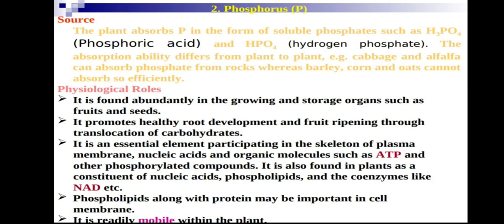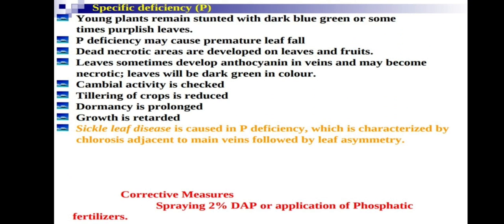Phosphorus is an essential element participating in the skeleton of the plasma membrane, nucleic acids, and organic molecules such as ATP (adenosine triphosphate). It is also found in plants as a constituent of nucleic acids, phospholipids, and coenzymes like NAD. Phospholipids, along with protein, may be transported in cell membranes. Phosphorus is readily mobile within the plant.